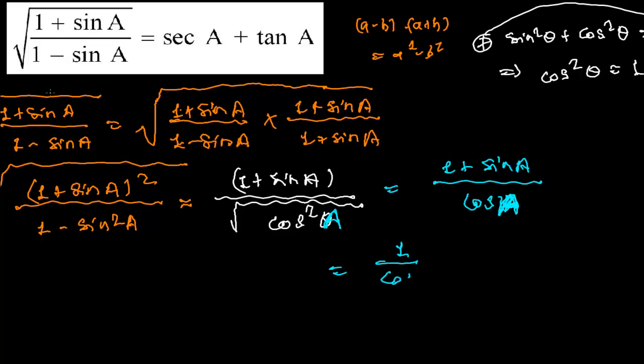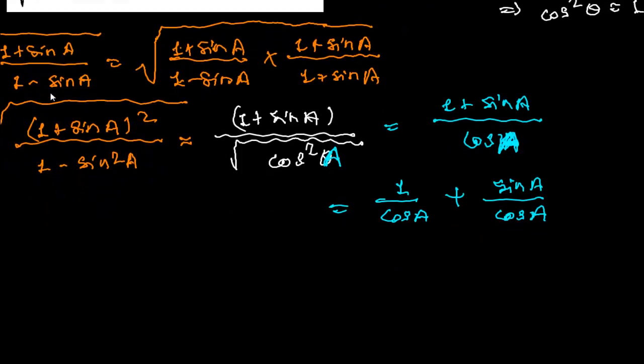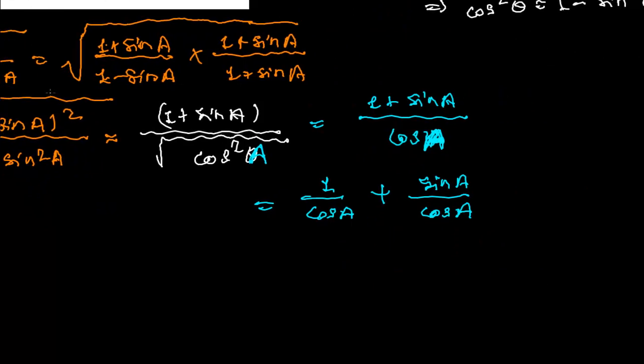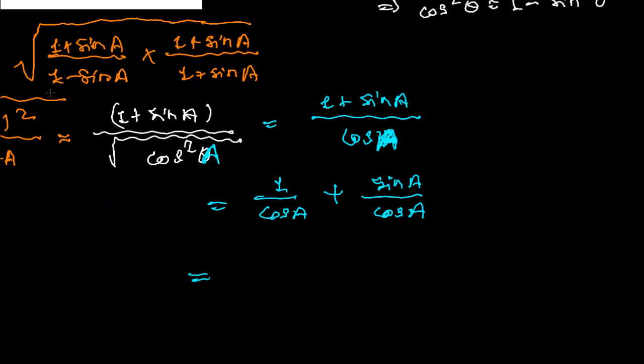And sine upon cos A, sine upon cos A. My pen is not working properly I don't know why I'm getting some curve lines. Well no problem I hope you'll excuse me. So 1 upon cos A you know that sec is reciprocal, is 1 upon cos A.